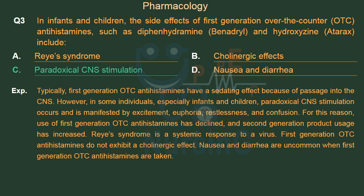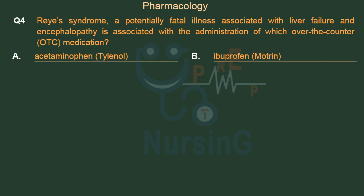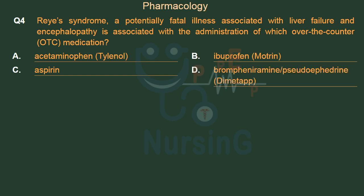Reye's syndrome is a systemic response to a virus. First-generation OTC antihistamines do not exhibit a cholinergic effect. Nausea and diarrhea are uncommon when first-generation OTC antihistamines are taken. A potentially fatal illness associated with liver failure and encephalopathy is associated with the administration of which over-the-counter (OTC) medication? Option A: Acetaminophen (Tylenol). Option B: Ibuprofen (Motrin). Option C: Aspirin. Option D: Brompheniramine.